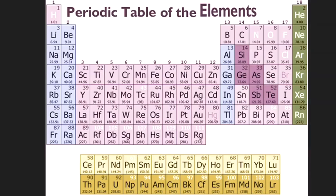The periodic table is one of the most famous charts in history, certainly in scientific history. You can think of it as an ingredient list for the universe. Everything that exists or has existed or will ever exist consists of atoms taken from the periodic table.